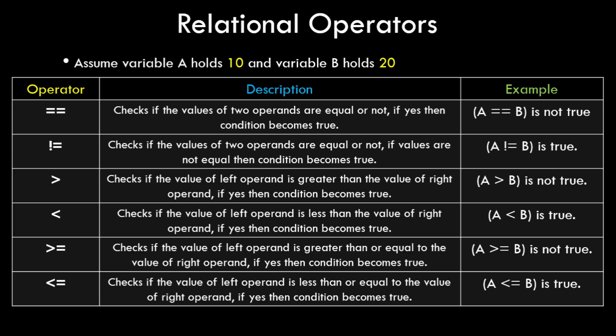Now let's look at relational operators, which are used to check conditions — usually accompanied by if-else statements. The double-equals operator (==) returns true if a and b are equal; since a is 10 and b is 20, it is false. The not-equal (!=) operator is the opposite, so a != b is true. Greater than (>), less than (<), greater-than-or-equal-to (>=), and less-than-or-equal-to (<=) operators follow similarly, and their output is always a boolean value: true or false.